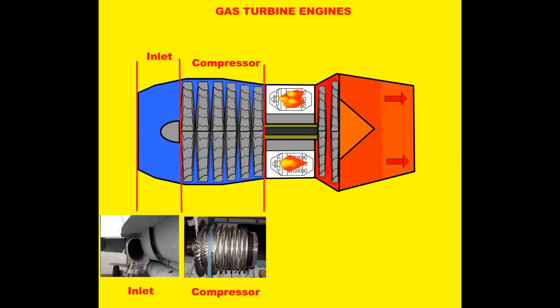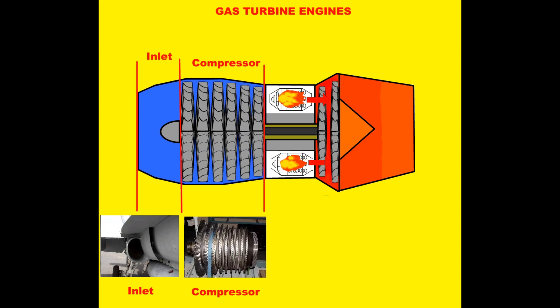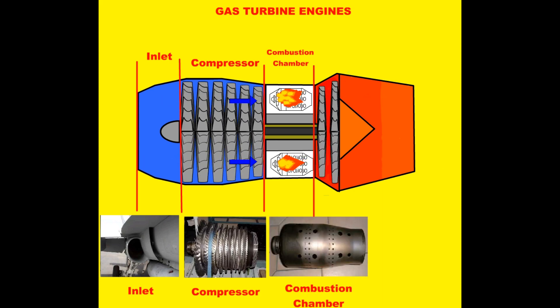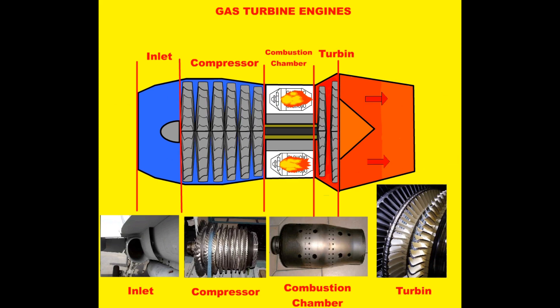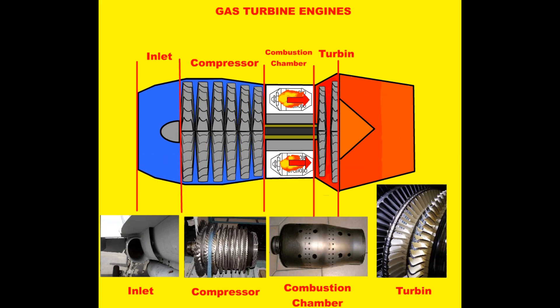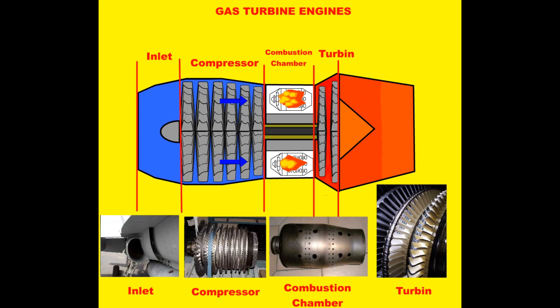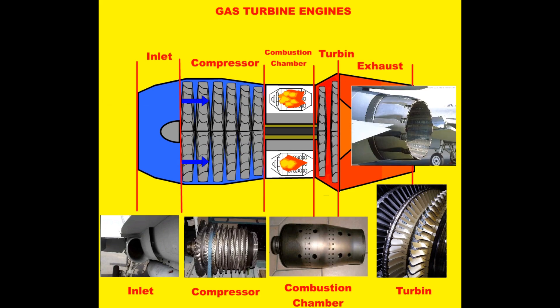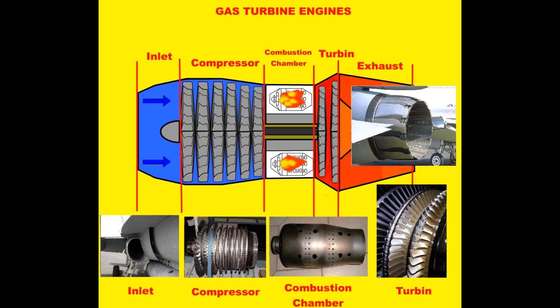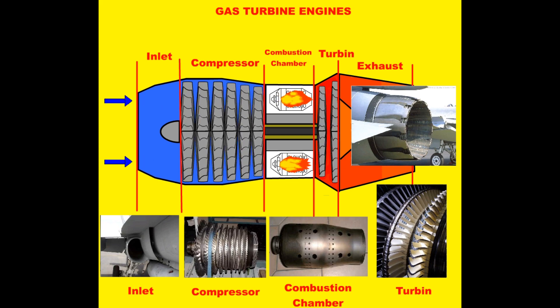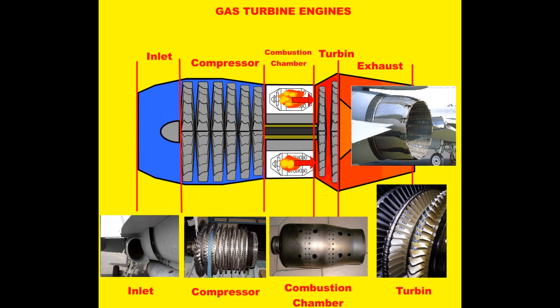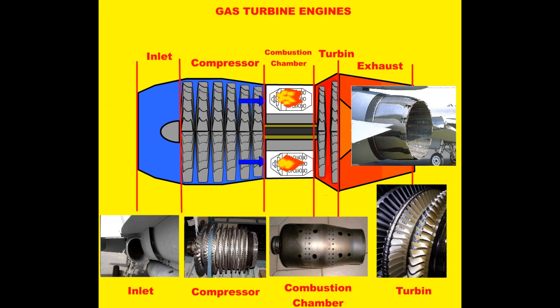Compressor that increases the pressure and temperature of the atmospheric air. The combustion chamber where the compressed air is mixed with fuel and gas energy is obtained. The turbine where the compressor is rotated by converting gas energy into mechanical energy. The exhaust where thrust is obtained as a result of passing the gases through a narrowed nozzle and accelerating them.